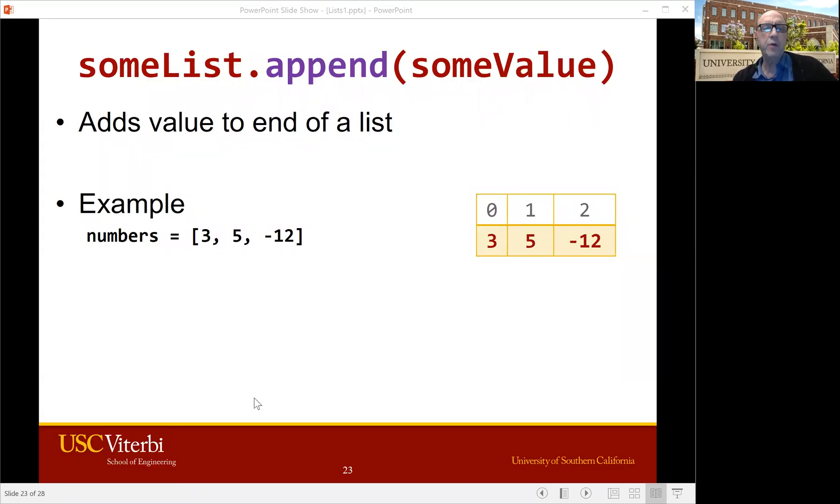Okay, so here's how to use append. We have some list dot append and then some value. So here's an example. We have a numbers list and let's say it already has 3, 5, and negative 12 on it. And then we say numbers dot append 40 and it sticks the 40 on the end of the list. So the list had 3, now it has 4 items on it. And remember when I said that we'll do starting with an empty list a lot? That means we're going to use append a lot because that's the way that you get stuff put on the list when it starts empty.